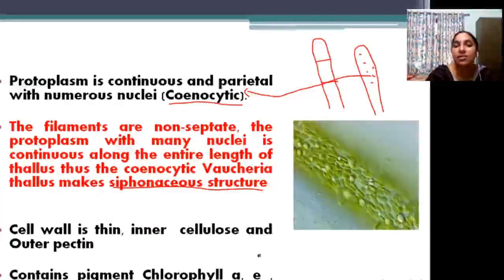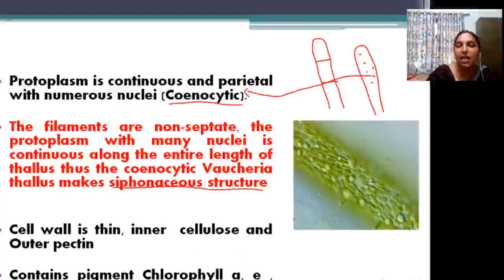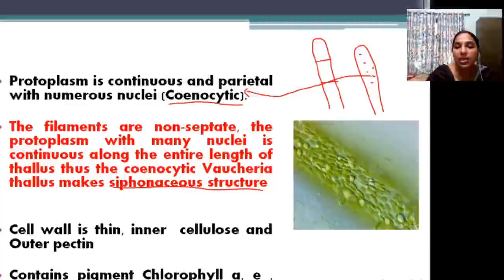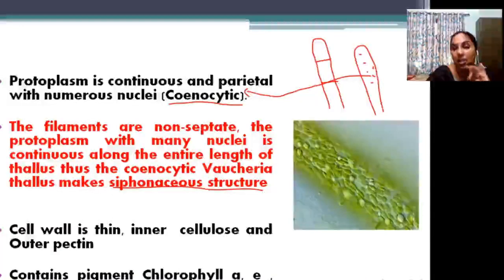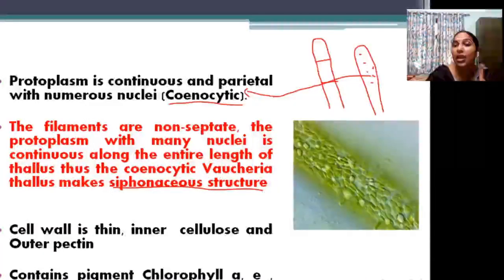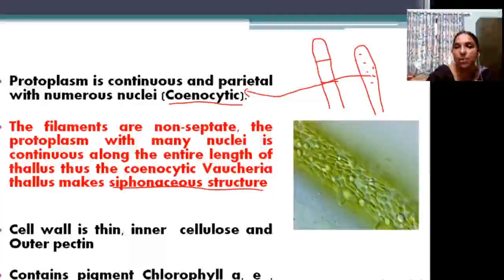The cell wall is very thin, made of cellulose, with the outer wall being pectin. The typical pigment is xanthophyll — you have to remember that. Xanthophyceae is named from xanthophyll. Chlorophyll A and chlorophyll E are also present, but the typical pigment is xanthophyll.